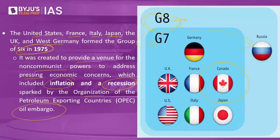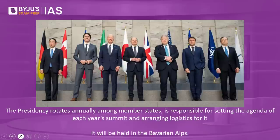Does the G7 have a secretariat? Unlike the United Nations or NATO, which have charters and secretariats, the G7 does not have a formal institution like a charter or a secretariat. The presidency rotates annually among the member states, and the presiding country is responsible for setting the agenda of each year's summit and arranging the logistics for it. Basically, the country that takes over the presidency is responsible for organizing and hosting the meeting.